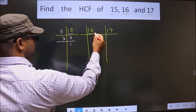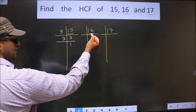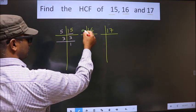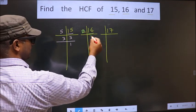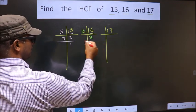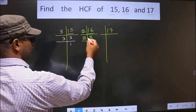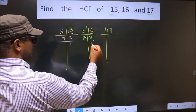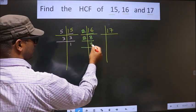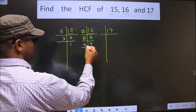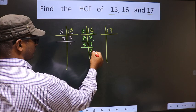Here we have 16. 16 is 2 times 8. Now 8 is 2 times 4. Now 4 is 2 times 2.